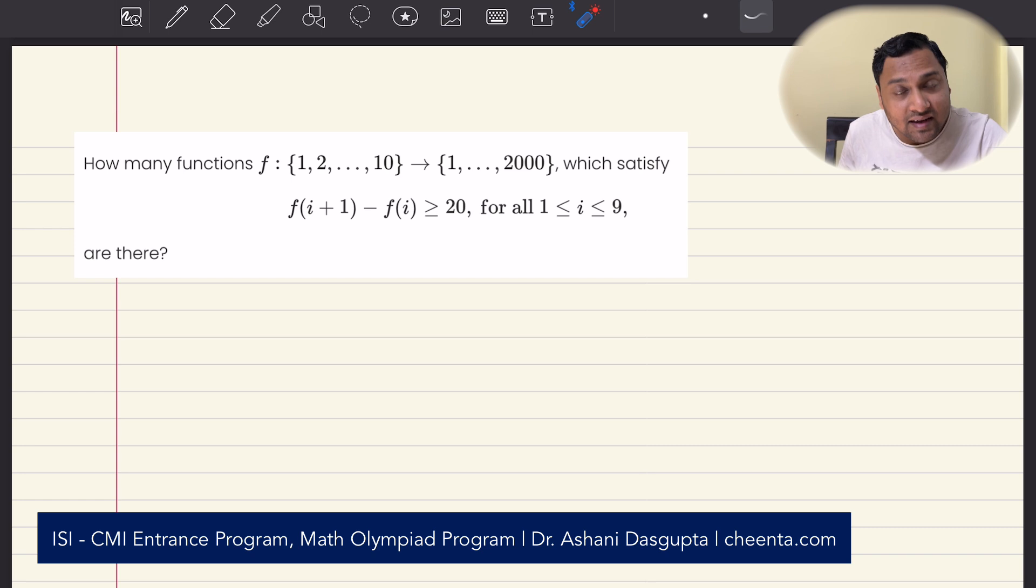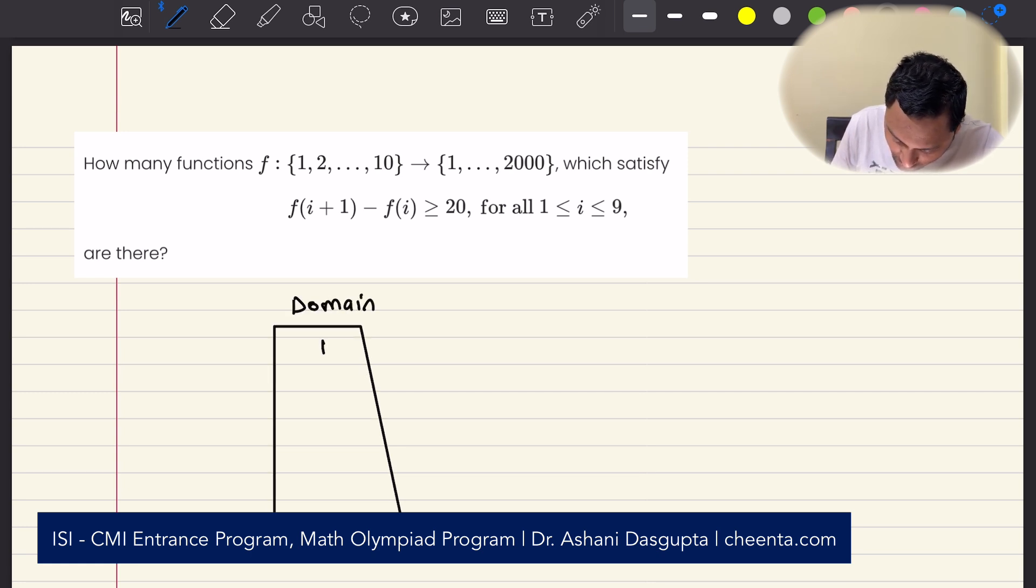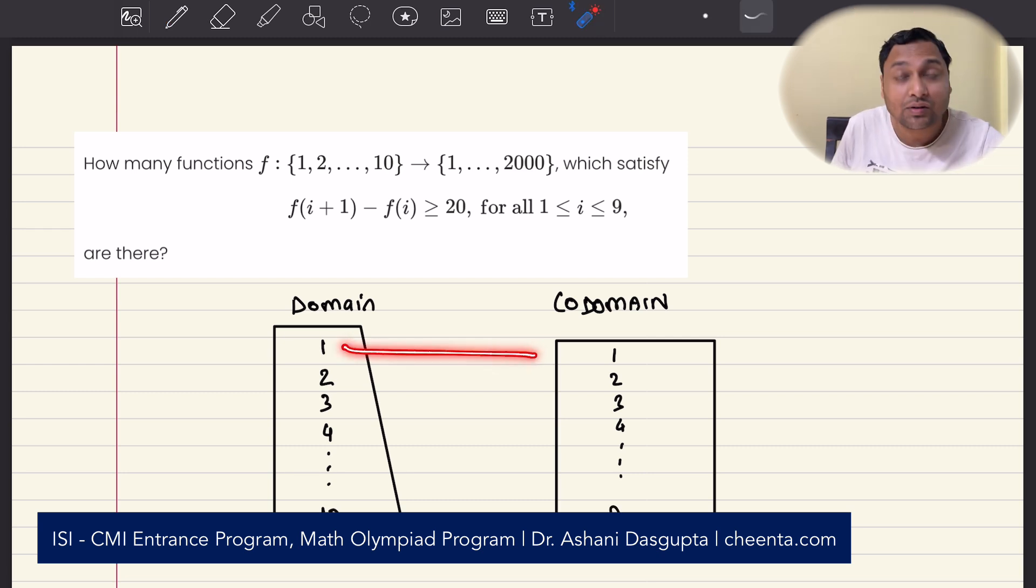I'll give you an example of one such function. So, the domain has the numbers 1, 2, 3, 4, up to 10 and the co-domain has the numbers 1, 2, 3, 4, up to 2000. We want to map the domain values to the co-domain values and we want to make sure that this condition is satisfied: f(i+1) - f(i) is greater than or equal to 20.